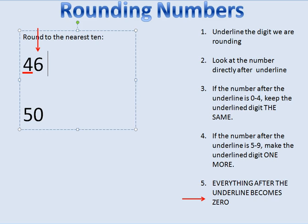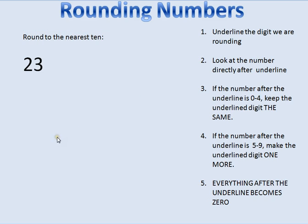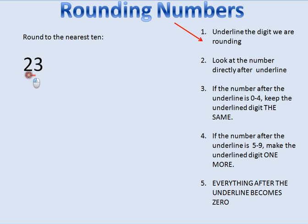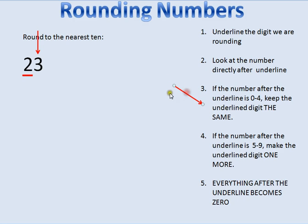Let me look at another number and do it the exact same way. The first thing I'm going to do is underline the digit we are rounding. It says round to the nearest ten, so I underline the number in the tens place. The number directly after the underline is three.